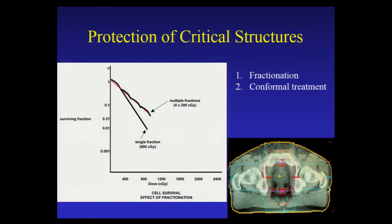As Dr. Groshan alluded to, typically radiation therapy is delivered in fractions — small doses given daily over the course of six to nine weeks of treatment. The reason is because the tumor is very close to normal tissue that's sensitive to radiation. By breaking the dose up into small doses over a period of time, that allows normal tissue to heal from the damage caused by radiation, whereas tumors don't have the same ability to heal.